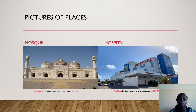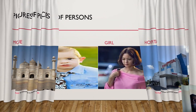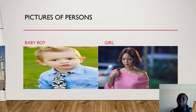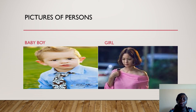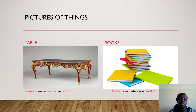Pictures of people. She is a person, a baby boy, a girl, a girl, a girl and a boy, a man and a woman. We are all persons. Picture of persons.